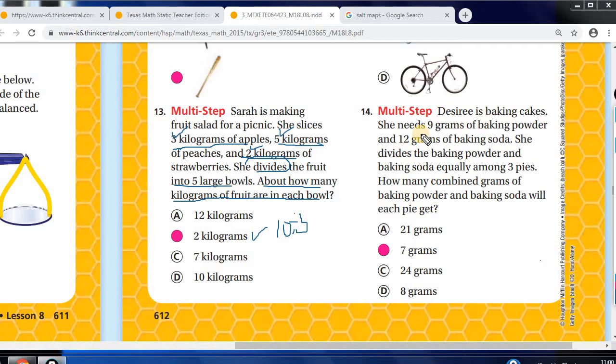The next one, Desiree's baking cakes. She needs nine grams of baking powder and 12 grams of baking soda. She divides the baking powder and baking soda among three pies, and it's equally. How many combined grams of baking powder and baking soda will each pie get? Again, you add your dry items, which are the grams here, the baking powder and the baking soda. So nine plus 12 is 21. And how many pies? There's three. Divide them equally, so your answer would be seven.